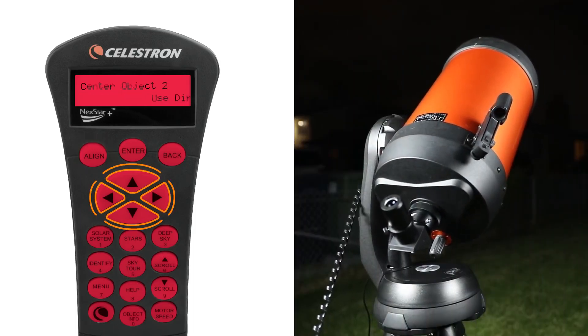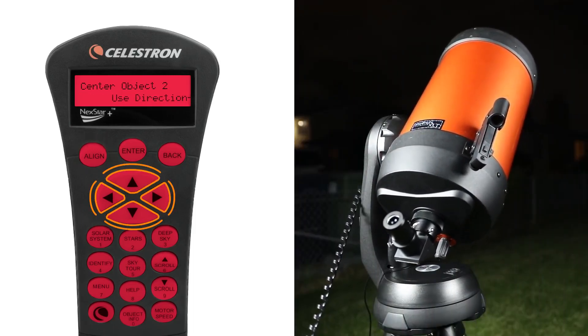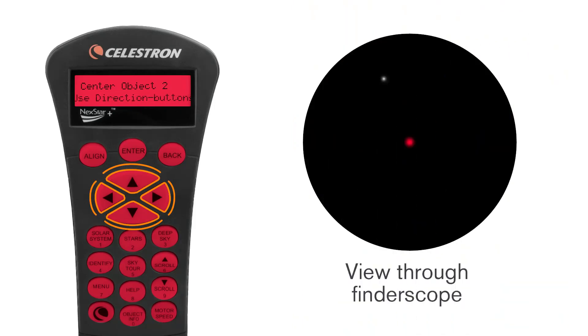You are now ready to move the telescope to the second alignment star. Use the same procedure you did for the first alignment star. Center the star in the finder scope and press enter. The motors will slow down. Center the star in the eyepiece and press align.